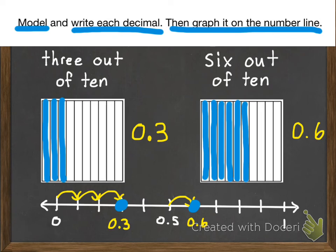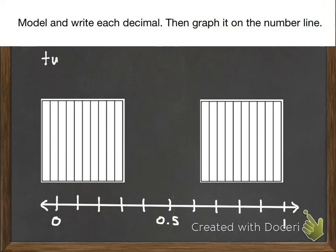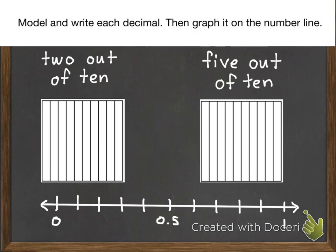Go ahead and try these next two yourself. Your first problem is two out of ten. And then five out of ten. Model and write each decimal, then graph it on the number line. When you're done, we'll have you check your work and see how you did. Go ahead and pause.